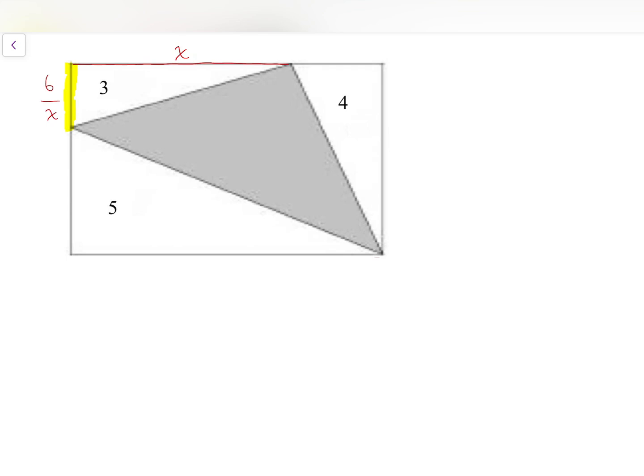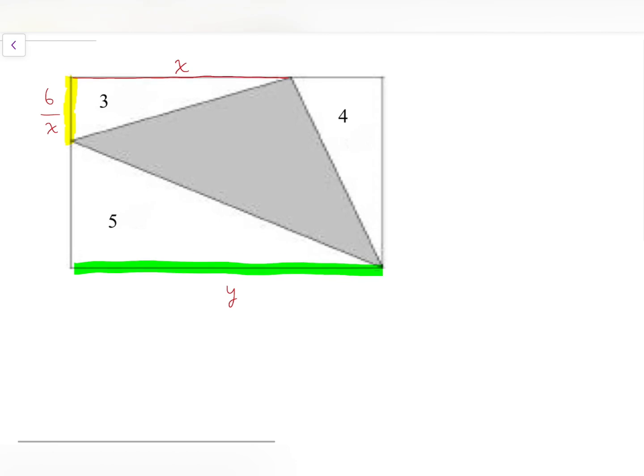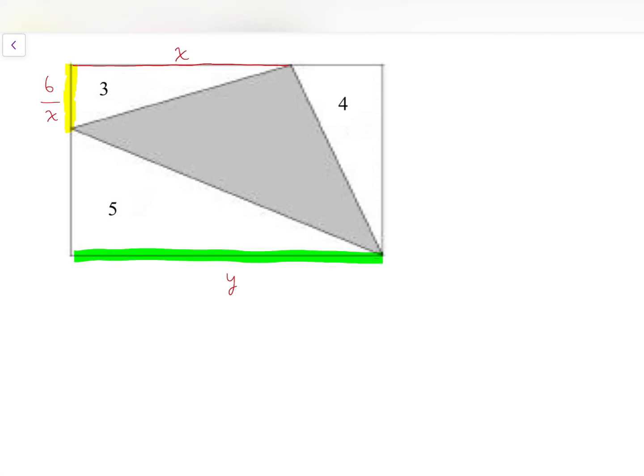Next I'm going to let y be the entire length of the rectangle. So it's y. Then going back to the upper side, we have this small segment to be equal to y minus x.